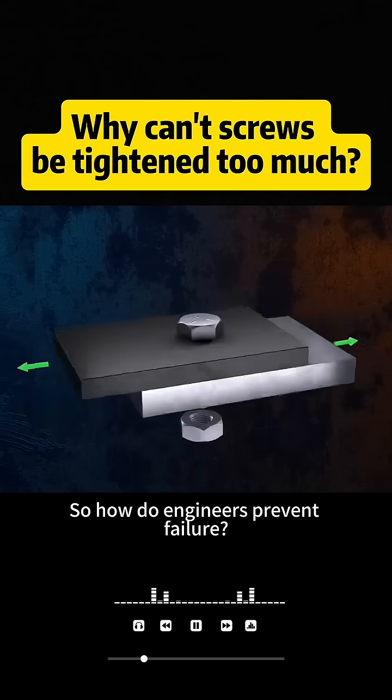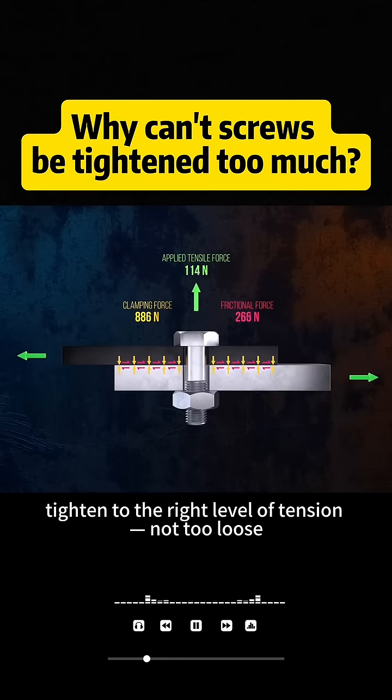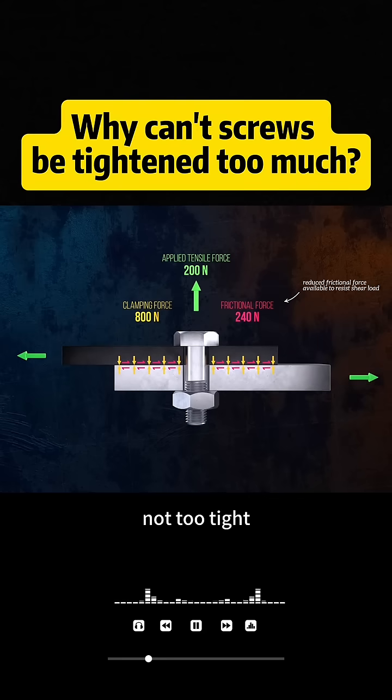So how do engineers prevent failure? First, tighten to the right level of tension. Not too loose, not too tight.